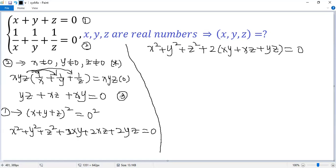Now look at condition 3. The part inside the bracket is just 0. So because of equation 3, we get x squared plus y squared plus z squared equals 0.